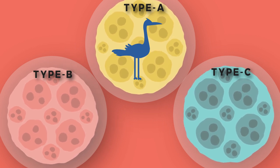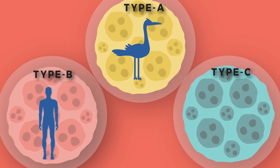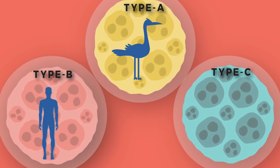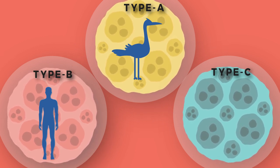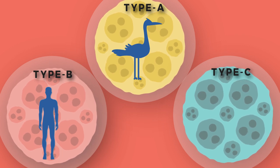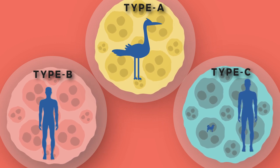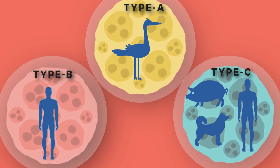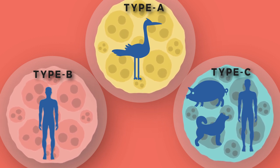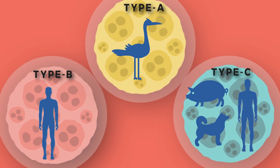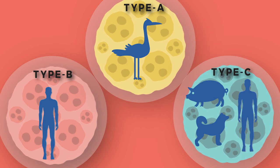Type B virus almost exclusively infects humans and is less common than influenza A. This type of influenza mutates at a rate two to three times slower than type A and consequently is less genetically diverse. Type C infects humans, dogs, and pigs, sometimes causing both severe illness and local epidemics. However, influenza C is less common than the other types and usually only causes mild disease in children.